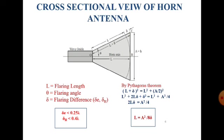Here, L denotes the flaring length along the horn axis, theta is the flaring angle, and delta L is the flaring difference, which can be obtained by the equality of path difference. It is delta_e when flaring is done along the electric field, and delta_h when flaring is done along the magnetic field. In a waveguide, electromagnetic waves consist of both electric and magnetic fields, which are orthogonal to each other. Considering triangle COB and applying Pythagoras' theorem: